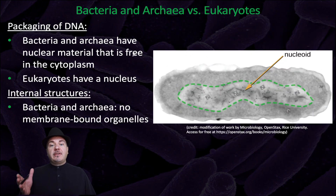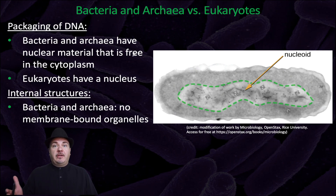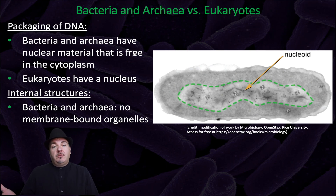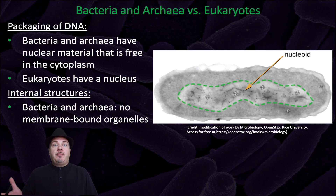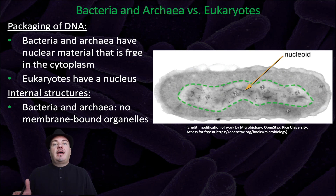The nucleus that eukaryotic cells have is one example of a membrane-bound organelle. Bacteria don't have a nucleus, and they also don't have any other membrane-bound organelles. You won't find the Golgi apparatus, the endoplasmic reticulum, or any of those membrane-bound organelles inside a bacterial cell.